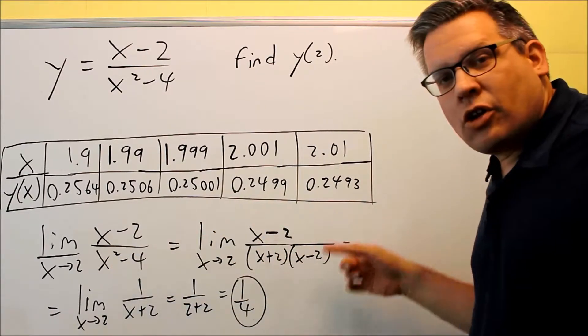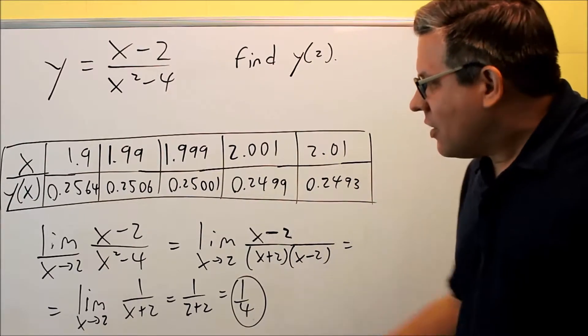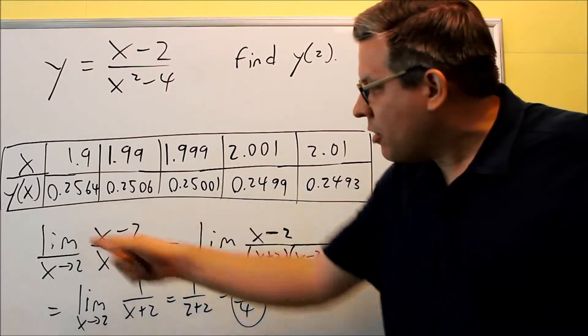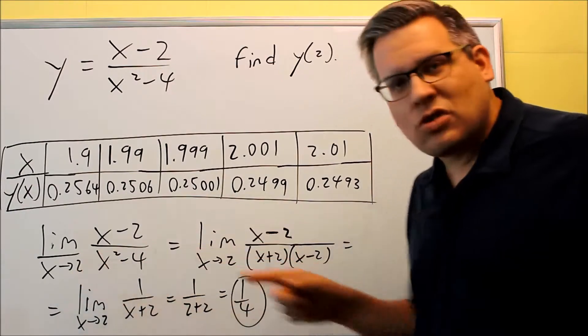Now, let's take a look at this algebraically. We are going to be looking at more of these types of examples later in this session. So here's the notation that you're going to use. We're going to say the limit of this function, x minus 2 over x squared minus 4, as x approaches 2.